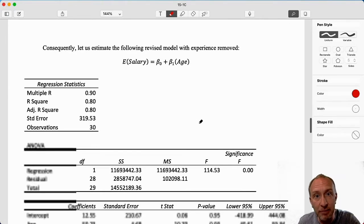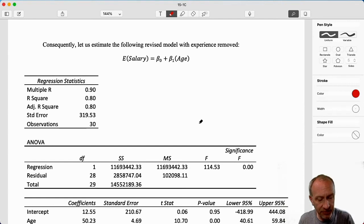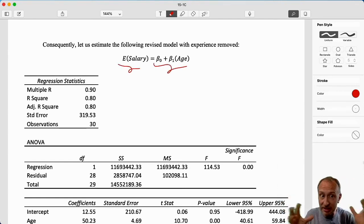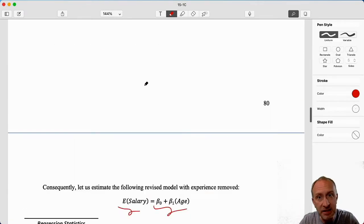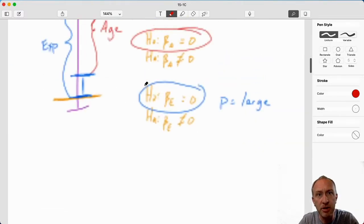I run my revised model, where now I have salary as a function only of age. So now I have really a simple linear regression like we had in module 14. I look at my r-squared, my adjusted r-squared. They're both at 0.8. How do those compare with my original model?